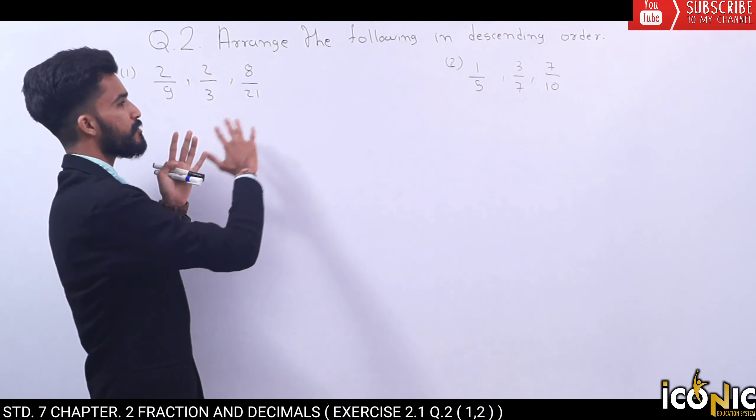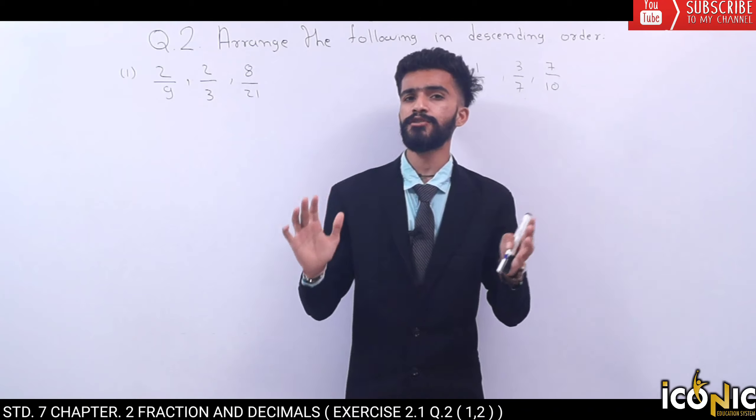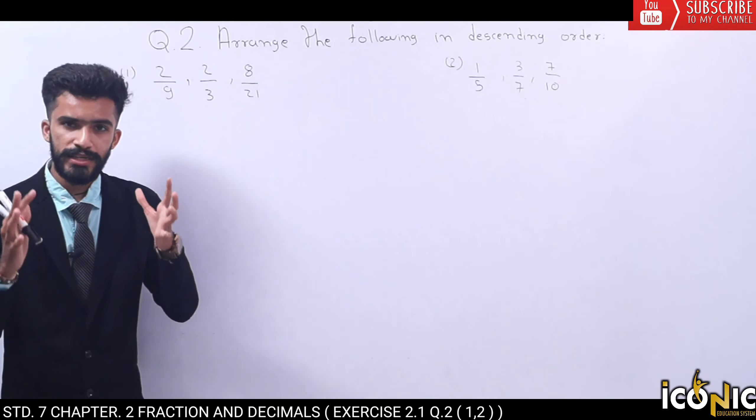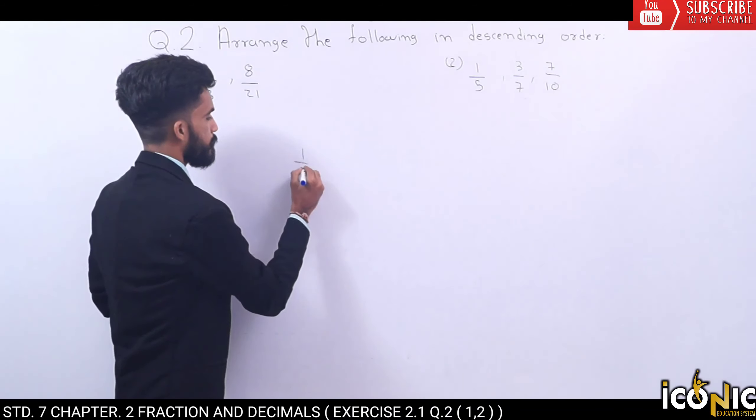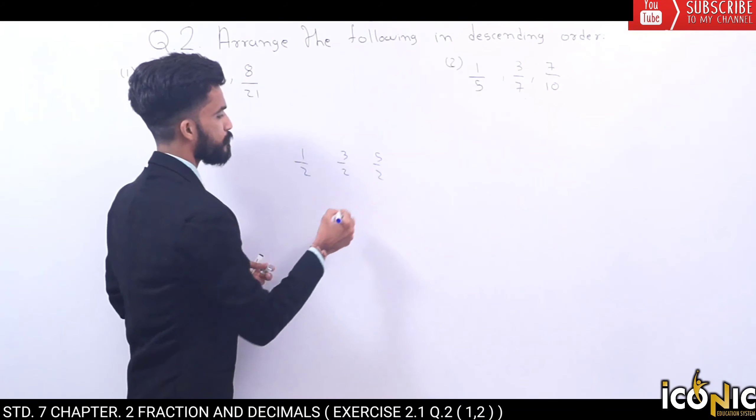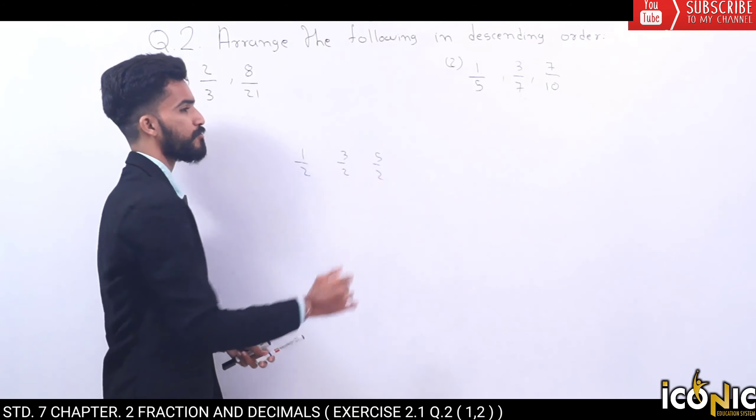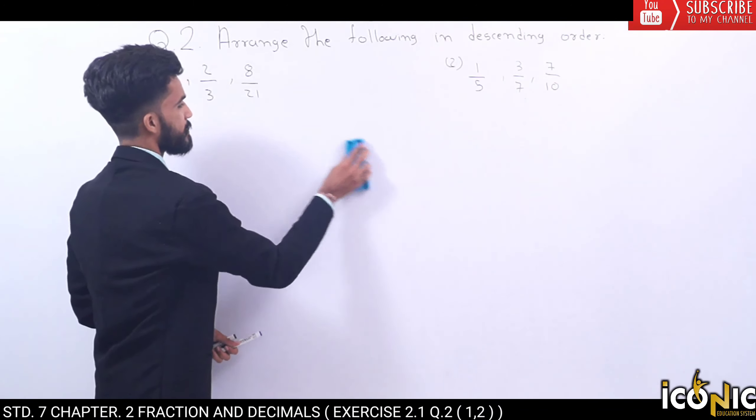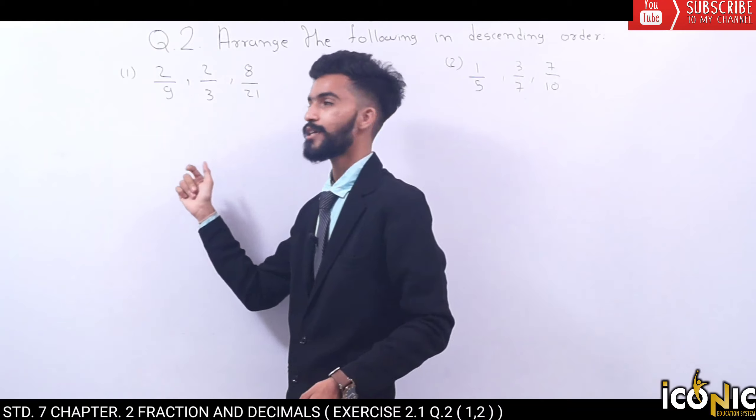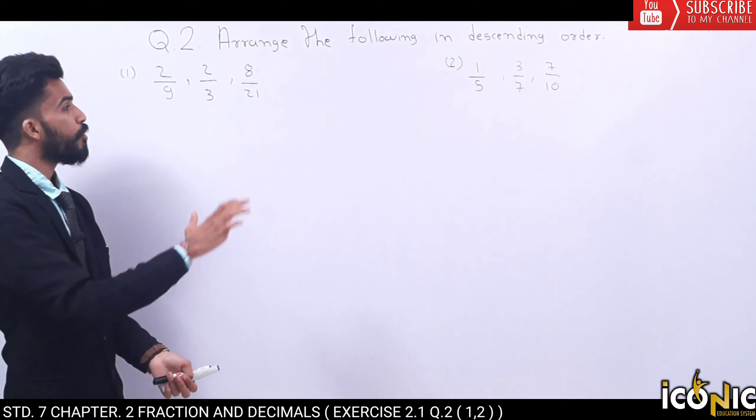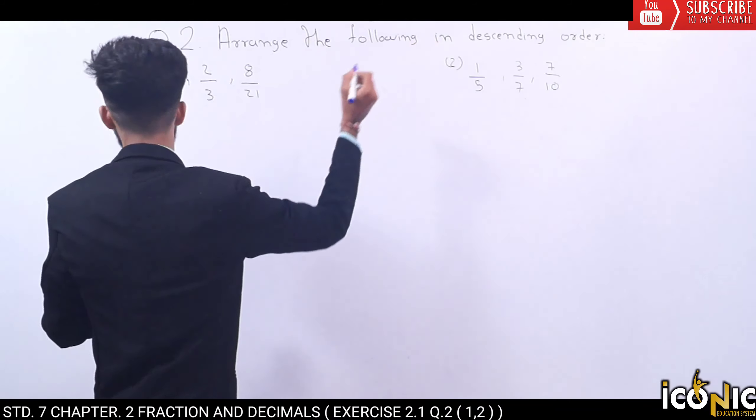Let's start our question number two. In question number two, we have to arrange the following in descending order. We have to arrange these fractional numbers into descending order. But here we have three denominators that are different. Then what do we need to do? We need to make the denominator the same.